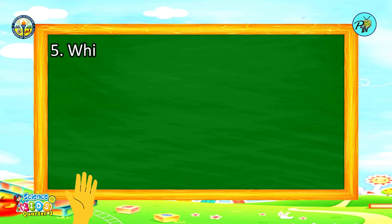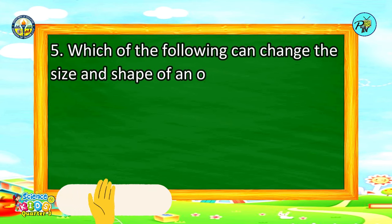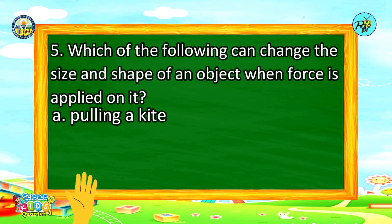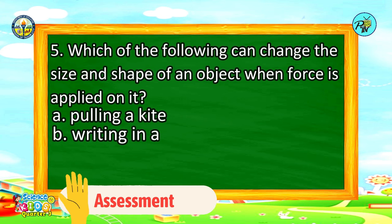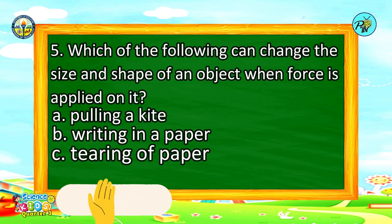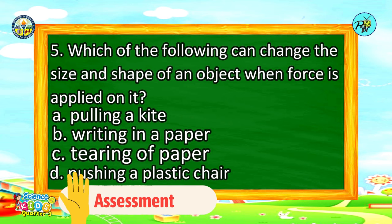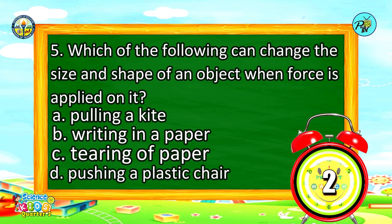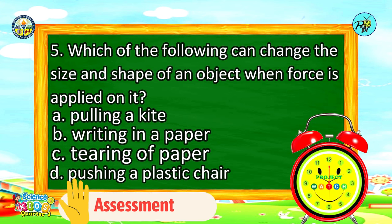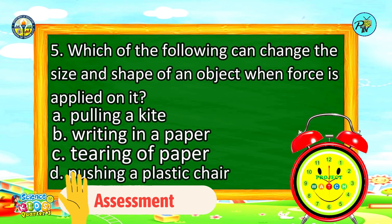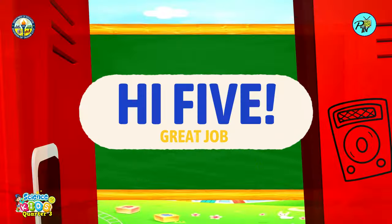Number 5: Which of the following can change the size and shape of an object when force is applied to it? A. Pulling a kite, B. Writing on paper, C. Tearing of paper, D. Pushing a plastic chair. Time's up! If your answer is letter C — Tearing of paper, you got it right! You're doing great, kids! Good job!